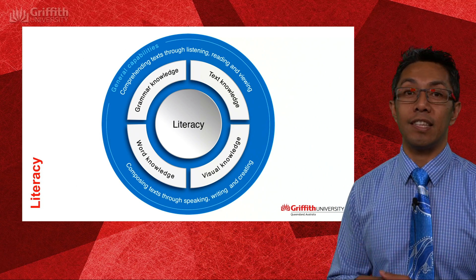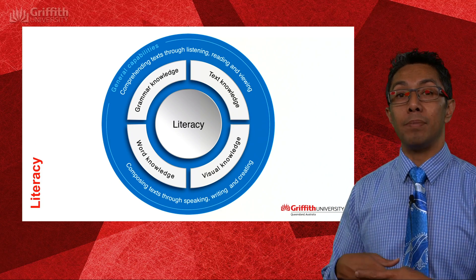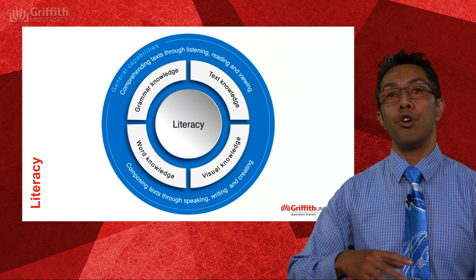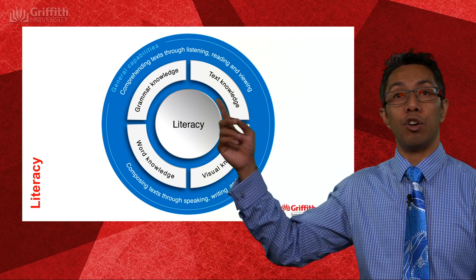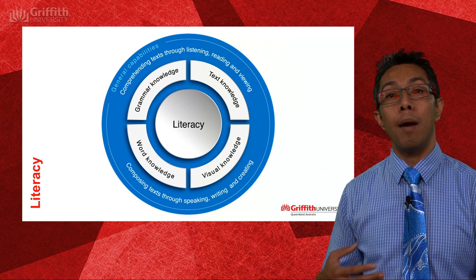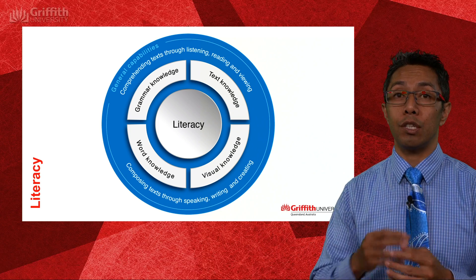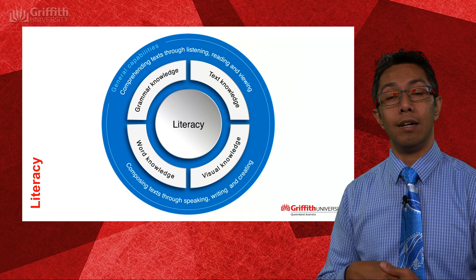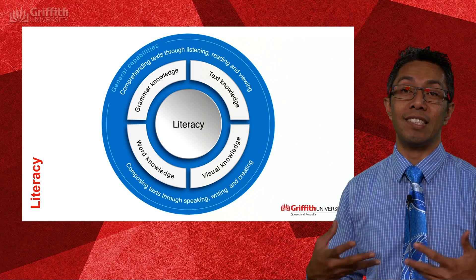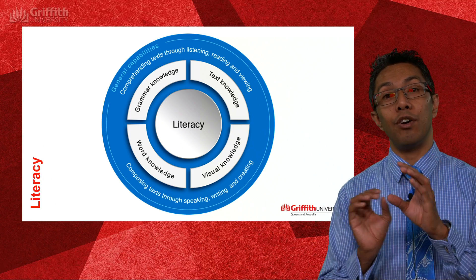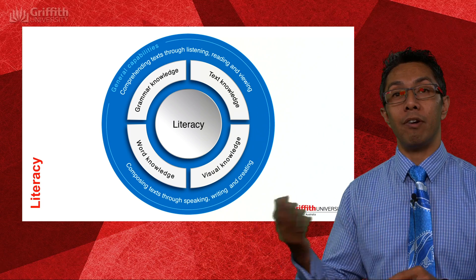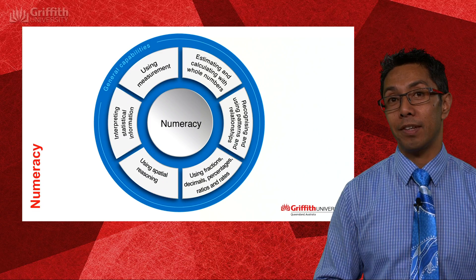The first capability is literacy — the ability to read and write. There are two key elements: comprehending text through listening, reading, and viewing, and also producing those texts. It's a double-sided coin — we need to be able to read and interpret text but also produce text ourselves. Within each of those two areas — comprehension and production — there are two sub-areas.